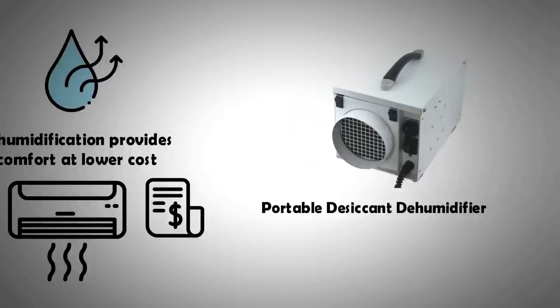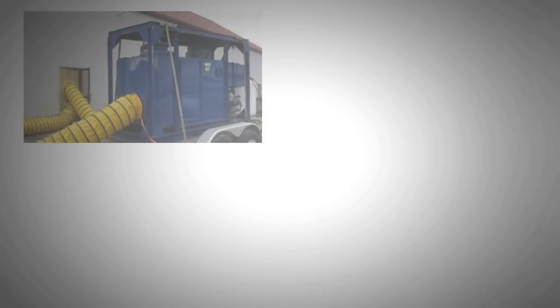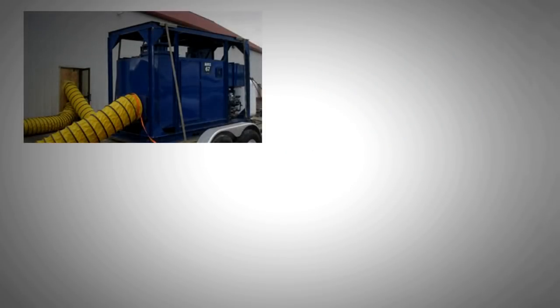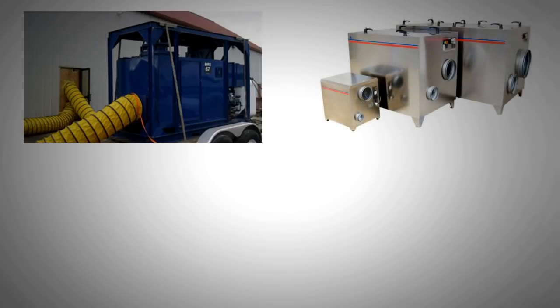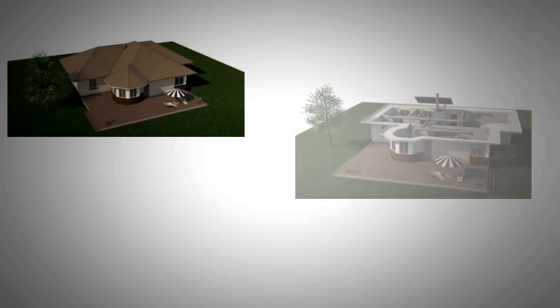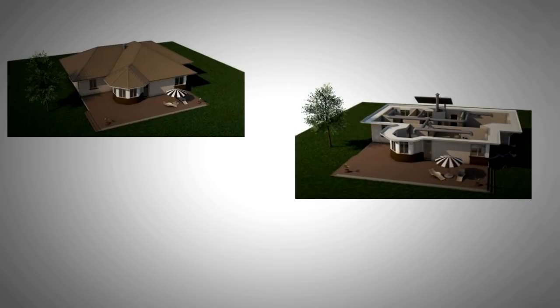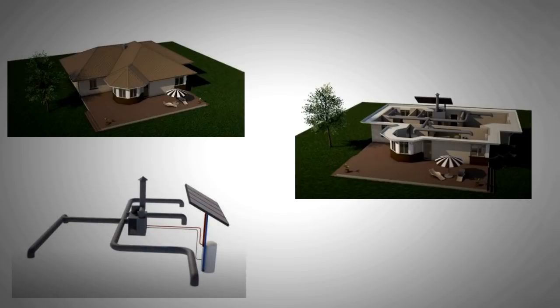Desiccant dehumidifiers are widely used in the industry. They can bring down the humidity levels to as low as 30%. They have been slowly making their way in domestic sector but they use electricity to heat the air through a heating element. The need is to replace this with a solar air heater. Currently there are only a handful of companies that provide solar-based desiccant dehumidifiers, but this can be easily made at home and you'll find YouTube videos that help you with this DIY project.